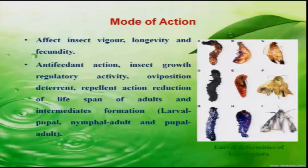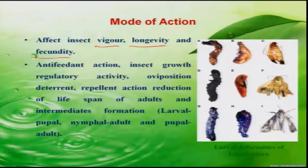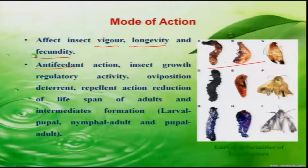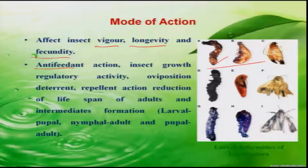Neem products affect insect vigor, longevity, and fecundity. The main function is acting as an antifeedant and inhibiting growth, resulting in abnormal intermittent stages. If larvae are affected, they will not proceed to pupae. If pupae are affected, you will get malformed adults.